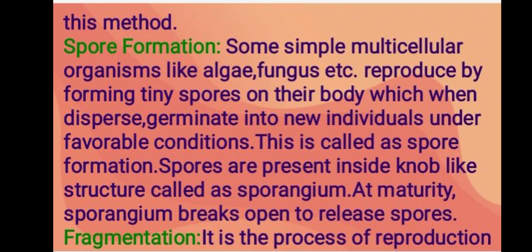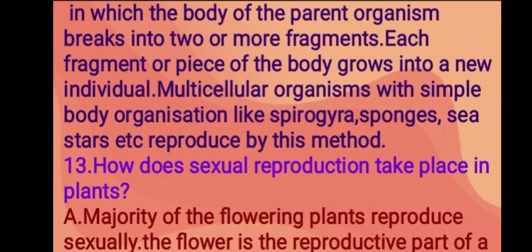This is called spore formation. Spores are present inside a knob-like structure called a sporangium. At maturity the sporangium breaks open to release spores. Fragmentation: it is the process of reproduction in which the body of the parent organism breaks into two or more fragments; each fragment grows into a new individual. Multicellular organisms with simple body organization like Spirogyra, sponges, and sea stars reproduce by this method.